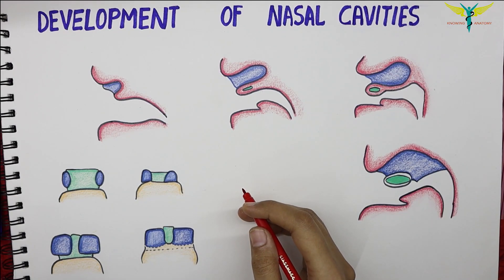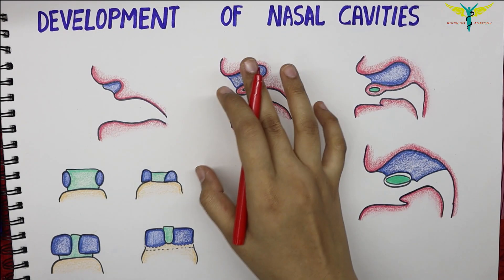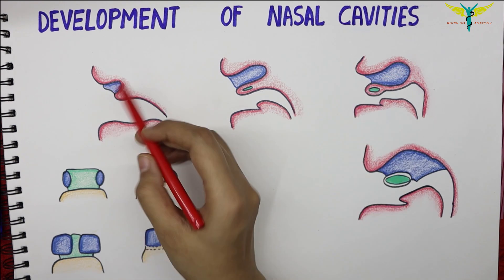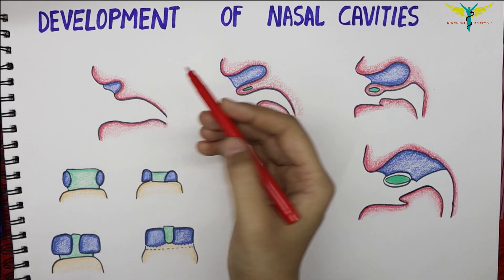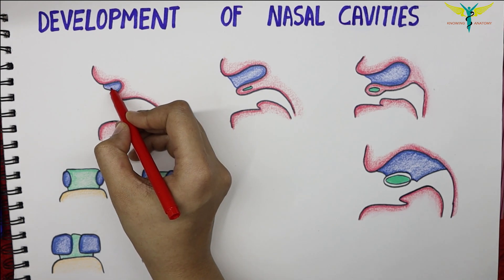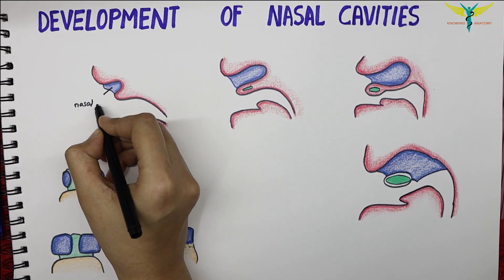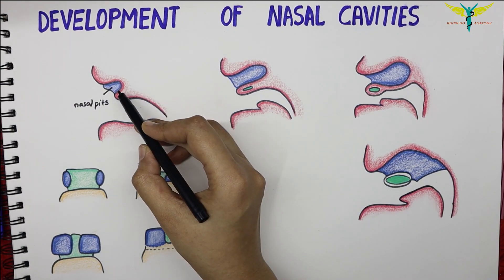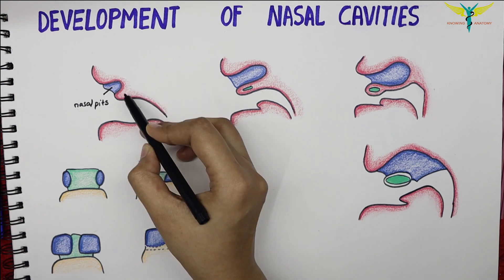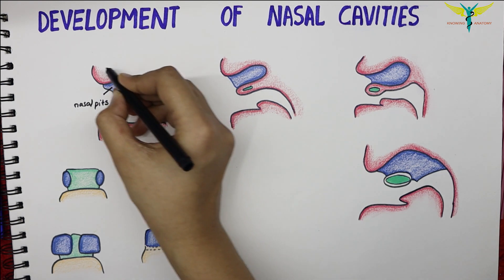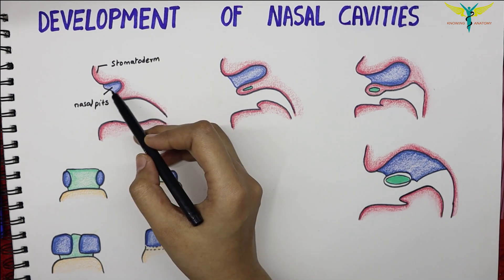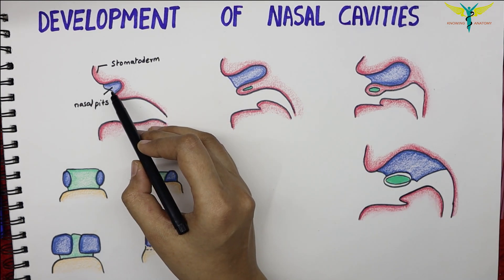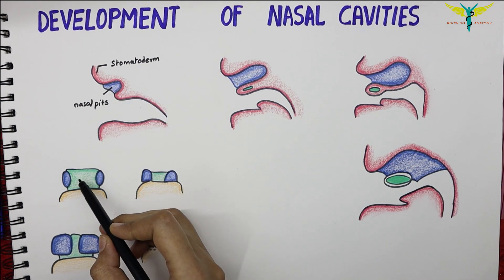In this video, let's learn about the development of the nasal cavities. The nasal cavities are formed by the extension of the nasal pits. These nasal pits are in open communication with the stomatodeum. The frontonasal process is present in between the pits.